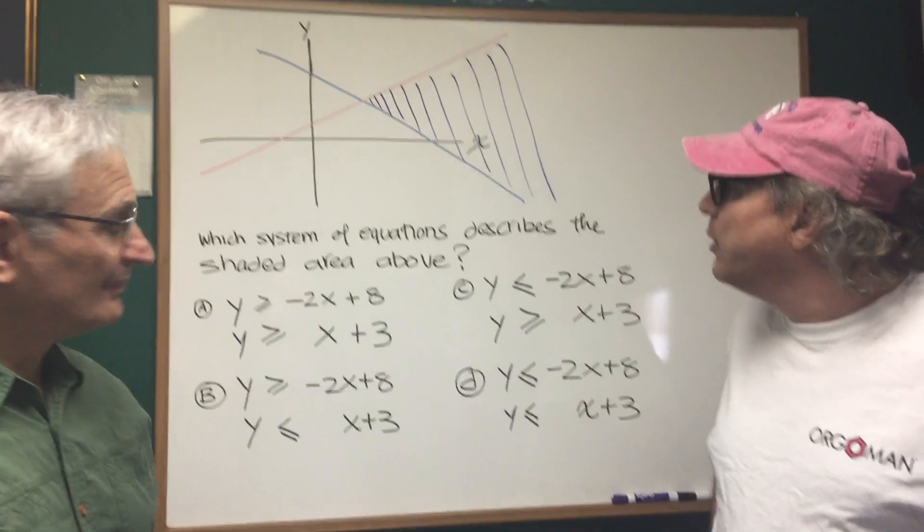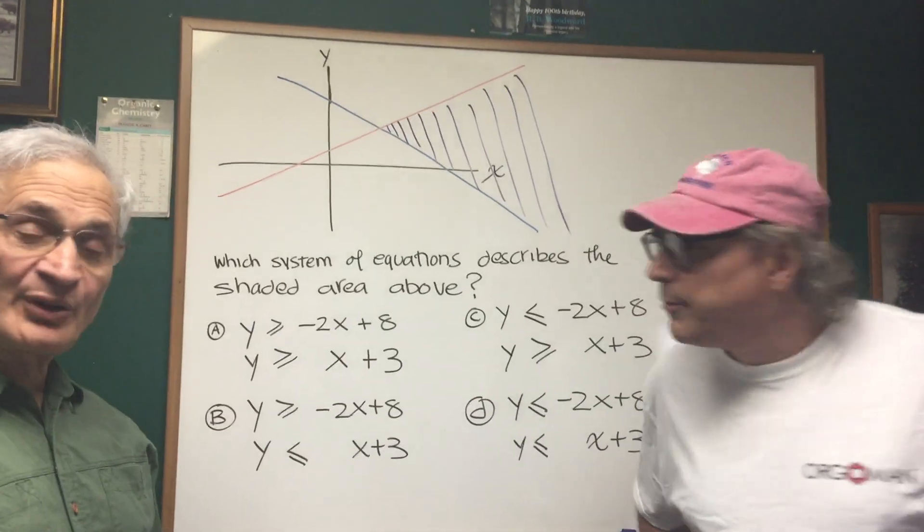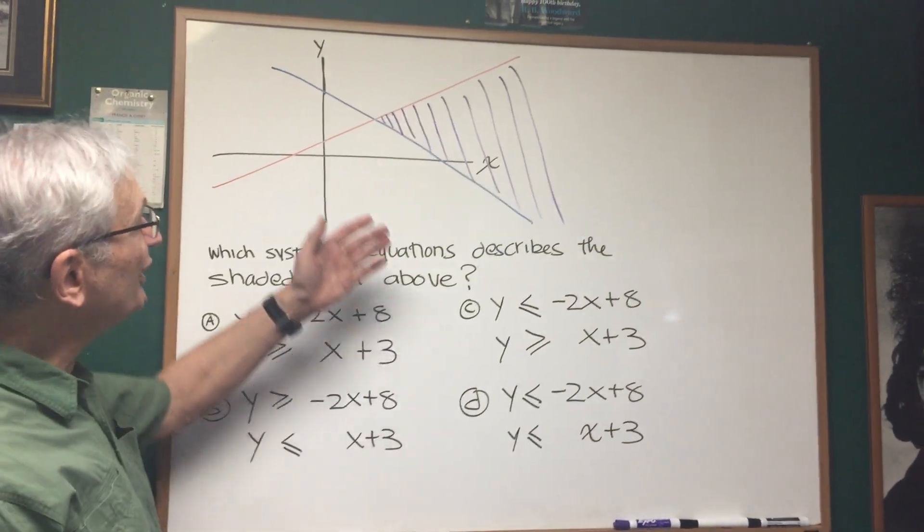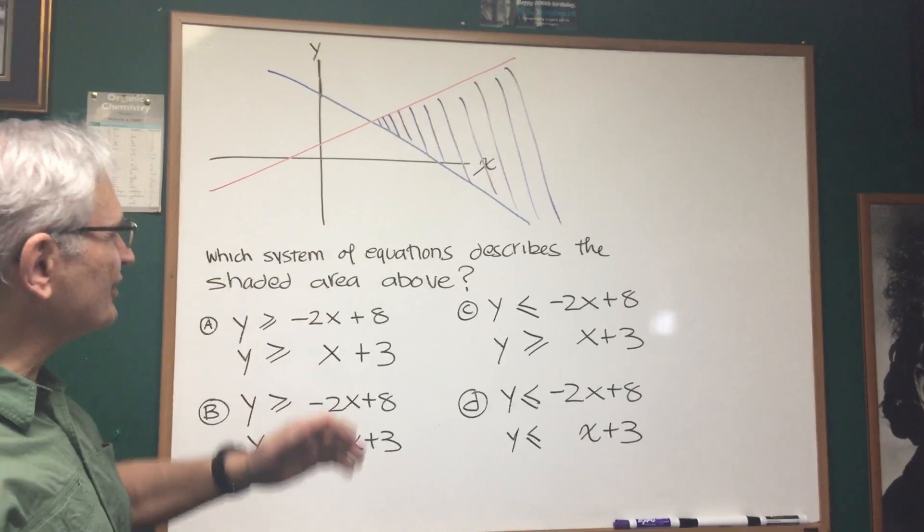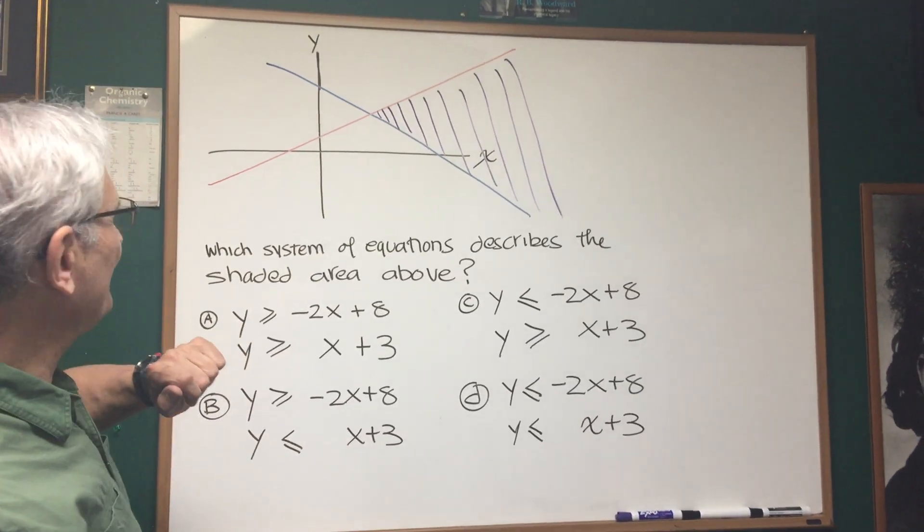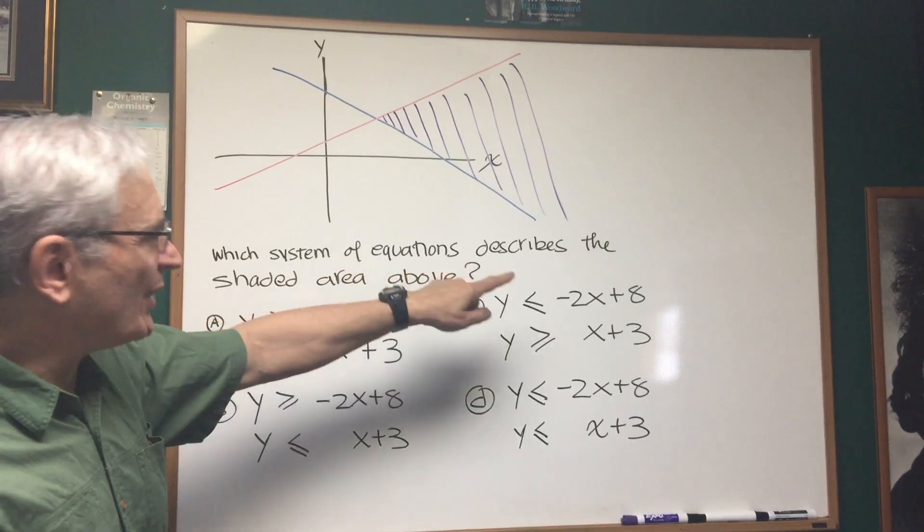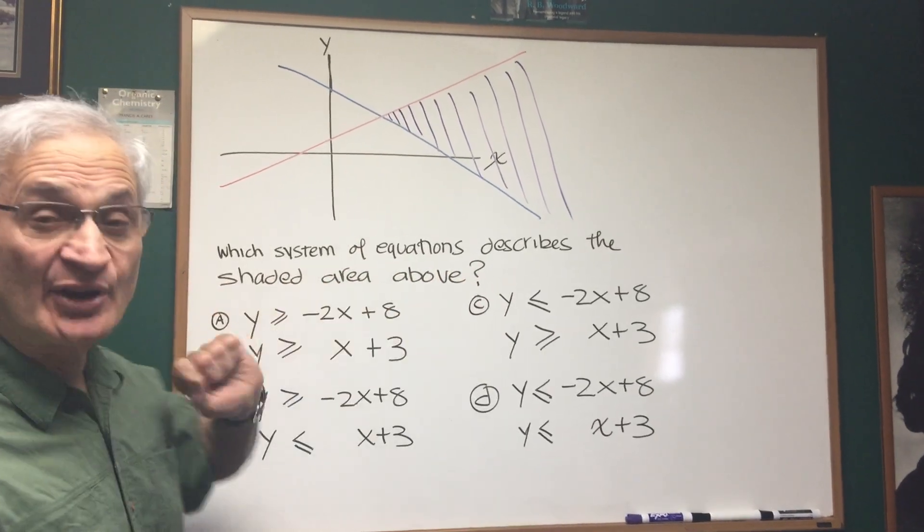All right, Professor, if you can show us some good work on this type of graph. Okay, here we are, Professor Blois here looking at graphs of linear equations and here is a question that comes up pretty often on the DAT. Which system of equations describes the shaded area above?